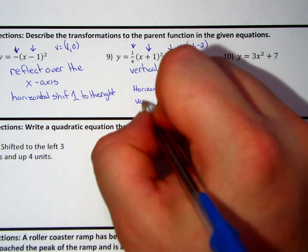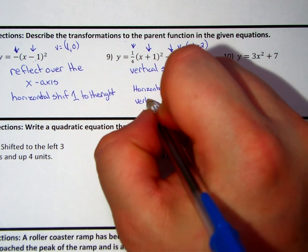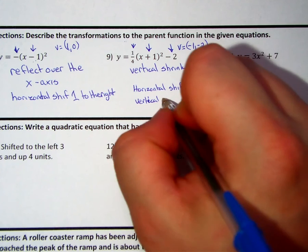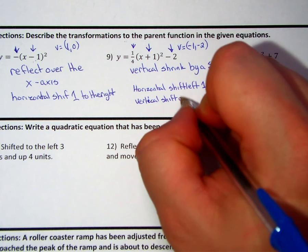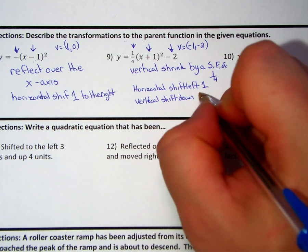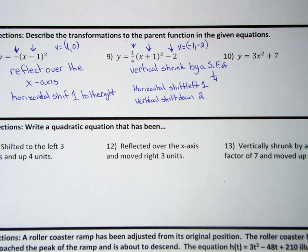We have a vertical shift down two. I don't see a negative sign to indicate a reflection, so that's about all we can do as far as our shifting.